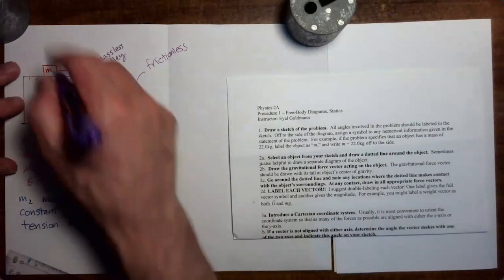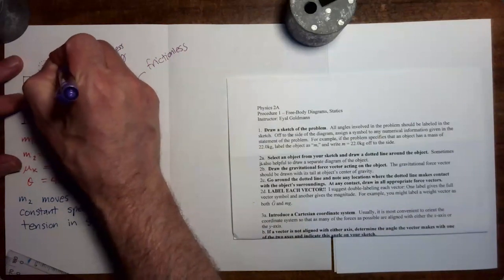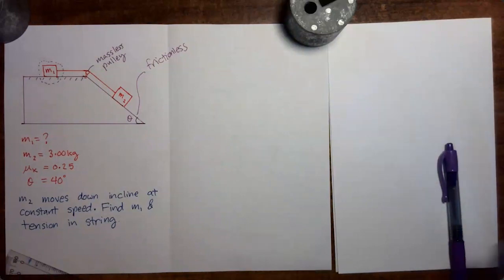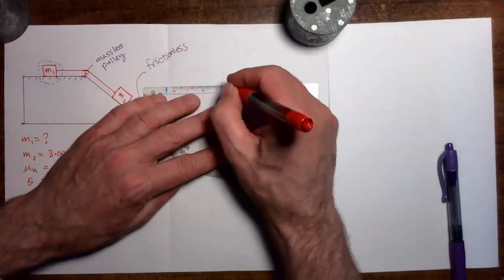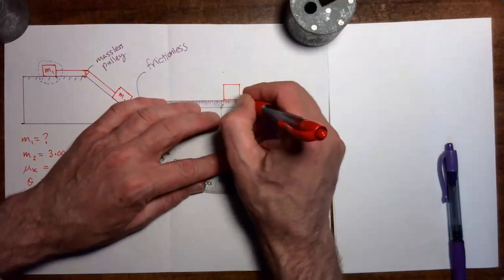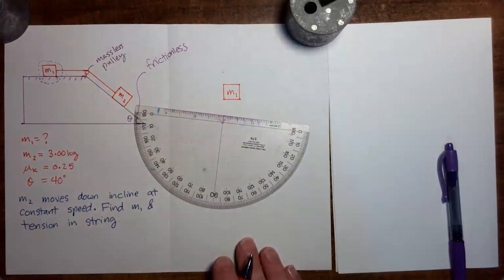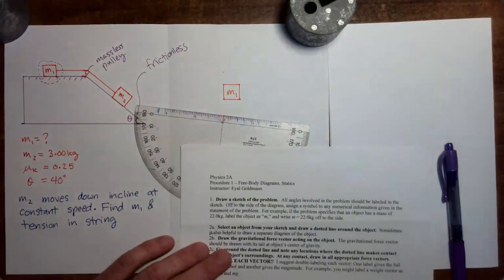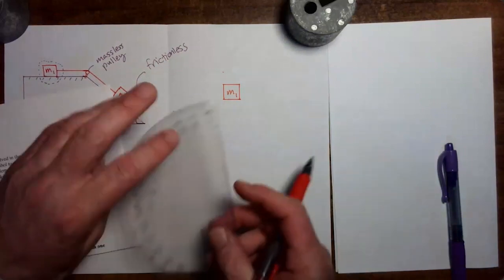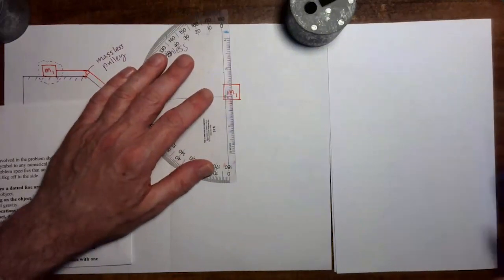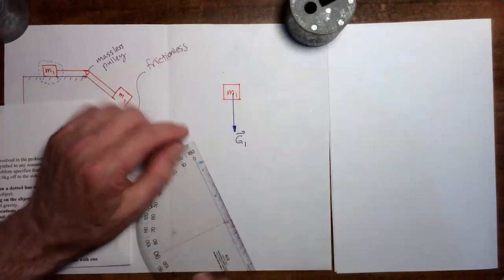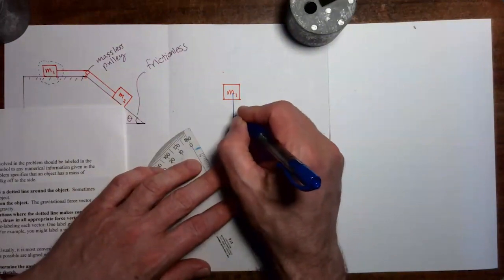Let's get started. We'll draw a dashed line around mass 1, then make a copy of mass 1 to the side and put in our force diagram. We start by drawing in the gravitational force vector, which points down. We'll call that G1 to distinguish it from the gravitational force on mass 2, with magnitude M1G.